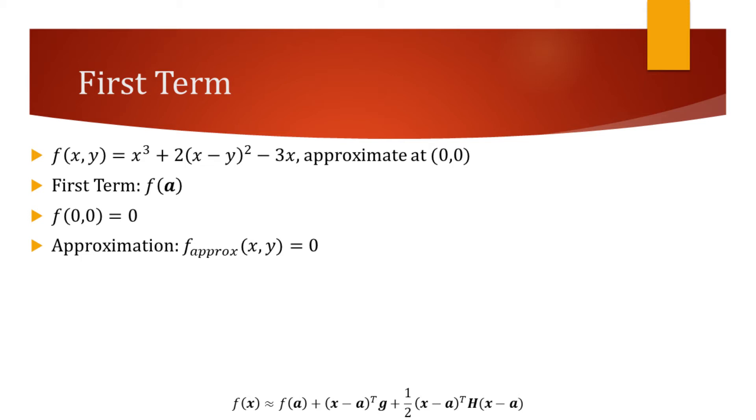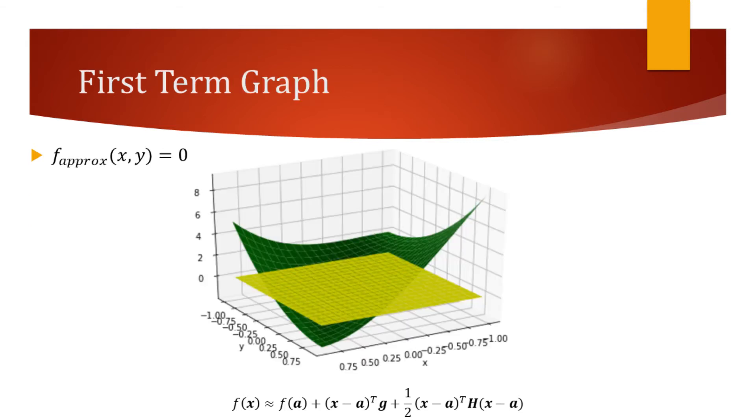Let's now observe the graphs. The green plot is of the original function, and the yellow plot is of our approximation. So far, our approximation equals the original function only at the origin.